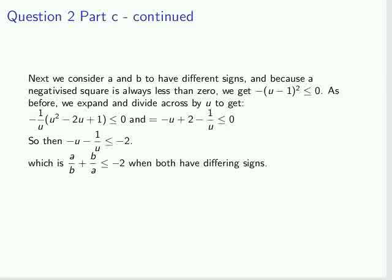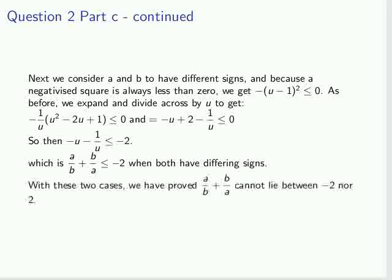And then, using our substitution, or substituting in a and b for u, or a over b for u, we actually get what was required. In other words, that when a and b have different signs, a/b + b/a cannot lie between 0 and -2. And that is our answer.